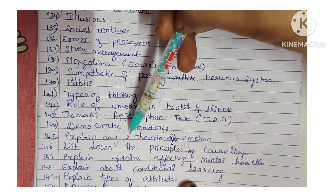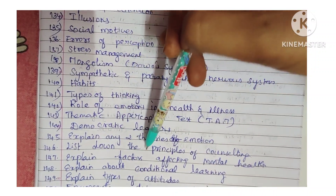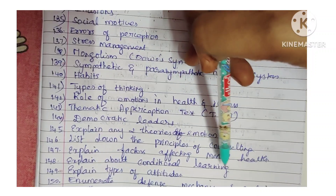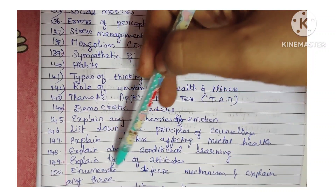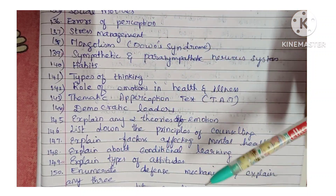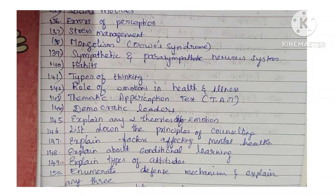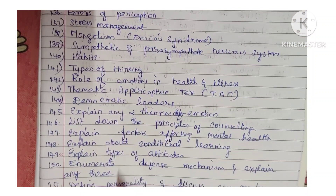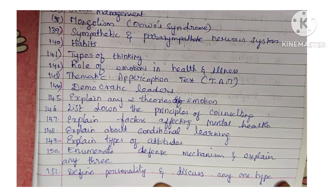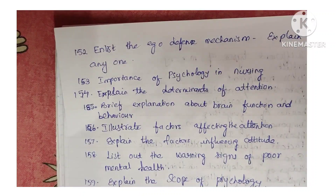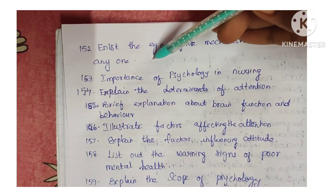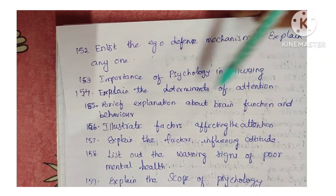Next: explain any two theories of emotion. Next: list down the principles of counseling. Next: explain factors affecting mental health. Next: explain about conditional learning. Next: explain types of attitudes. Next: enumerate the defense mechanisms and explain any three. Next: define personality and discuss any one type. Next: enlist the ego defense mechanism and explain any one. Next: importance of psychology in nursing.